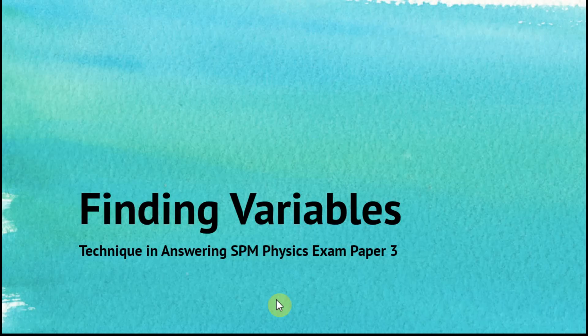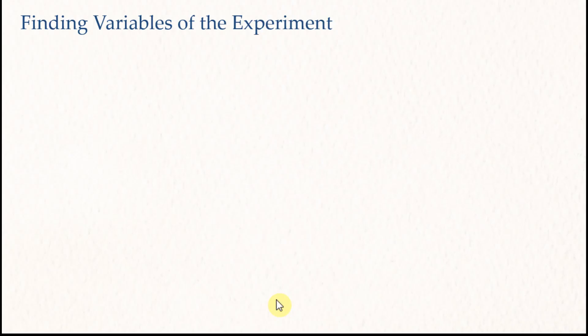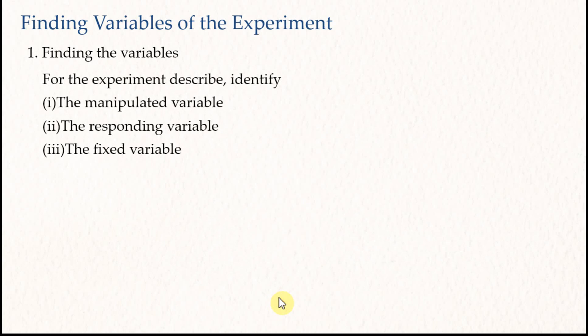Finding variables. In question one, you will be given some information about an experiment, and then you are asked to answer some questions based on the information given. Usually, the very first sub-question in this question is finding the variable of the experiment. The questions usually sound like this: For the experiment, describe or identify the manipulated variable, the responding variable, and the fixed variable.